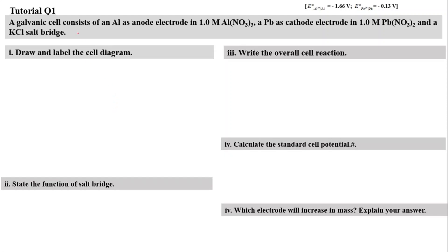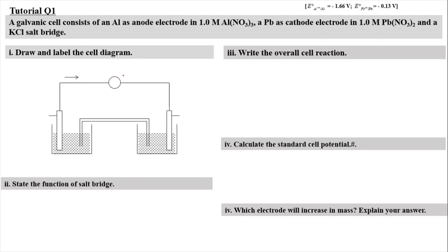For tutorial Question 1, a galvanic cell consists of aluminium as an anode with electrolyte in 1.0 molar aluminium nitrate, plumbum as cathode with electrolyte in 1.0 molar plumbum nitrate, and a KCl salt bridge. We have to draw and label the cell diagram. The electrodes are separated into two separate beakers, with aluminium acting as the anode, immersed in 1.0 molar aluminium trinitrate.